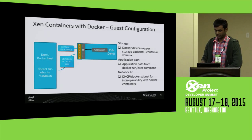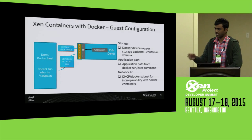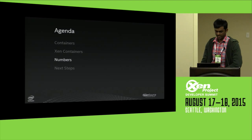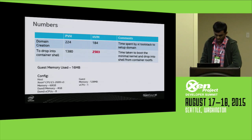The three important things to configure the guest with are: storage — passing the Docker device mapper container volume; the entry point — what the Docker container wants to run (for example, Docker Ubuntu running bash); and the network IP from Docker's own subnet. These three pieces of information are passed to the guest so it can launch the application with the correct entry point and networking.